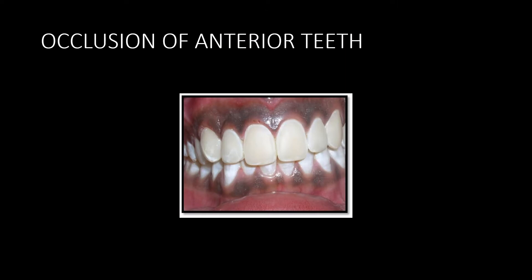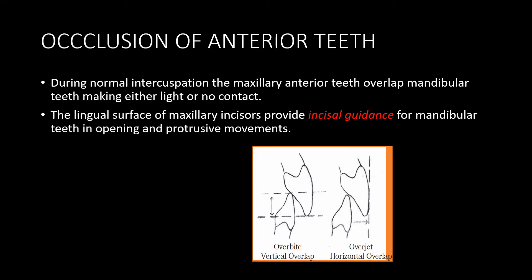Coming to the occlusion of the anterior teeth: when the jaws are closed during maximum intercuspation, the anterior teeth overlap — the maxillary ones overlapping the mandibular teeth with light or no contact. The influence of the mandibular movement due to the relative overlap of the anterior teeth is known as anterior guidance. The lingual surfaces of the maxillary incisors provide incisal guidance for the mandibular teeth in opening and protrusive movements.